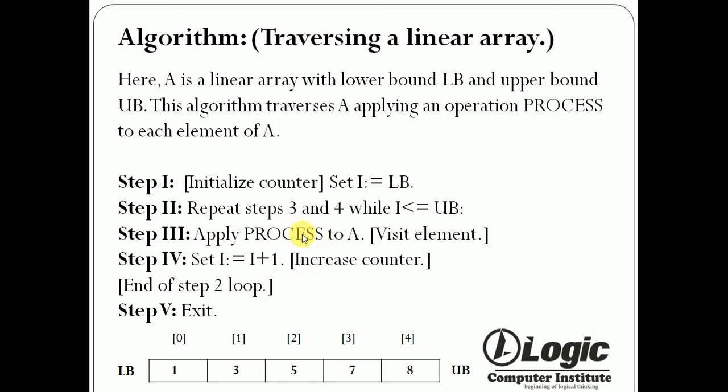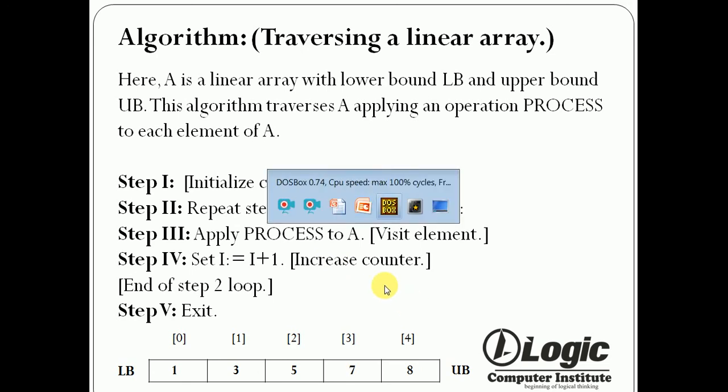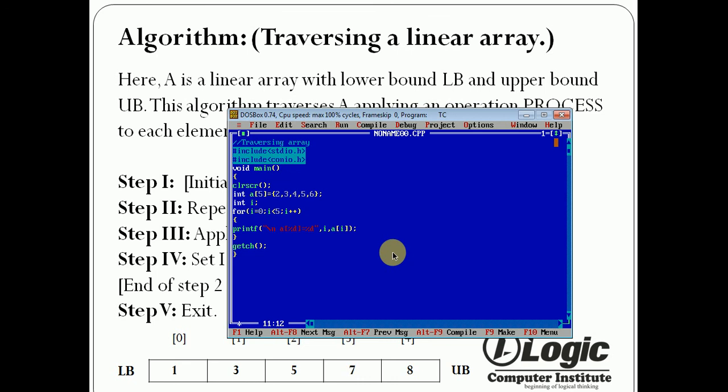The loop is executed until the condition becomes true. So this is the algorithm of traversing a linear array. Now we see the program, this is the program of traversing a linear array.